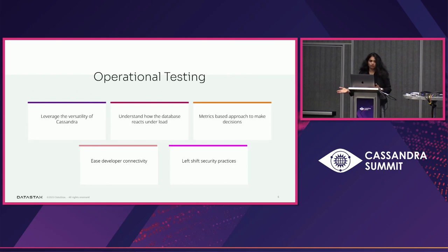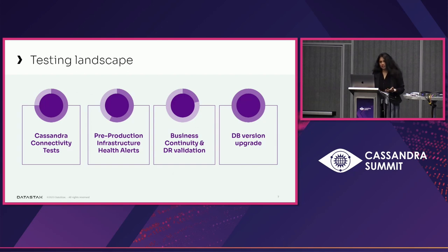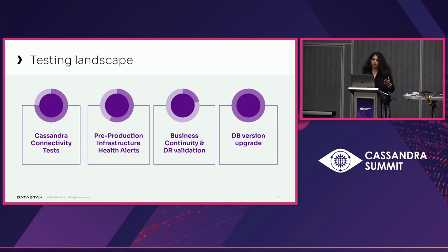And finally, left-shift security processes so that there is no cognitive overload on whether you're doing it right. A typical testing landscape that is centric around database involves the following: there is Cassandra connectivity testing — am I able to connect, is my application able to connect, where is your application situated, what driver is it using? And then you have pre-production infrastructure health alerts. In most organizations, production and pre-production infrastructure layout and size are distinctly different, so you need a systematic approach to getting the right health metrics and alerts that would carry over and translate into production alerts.